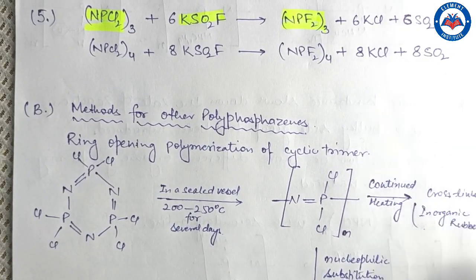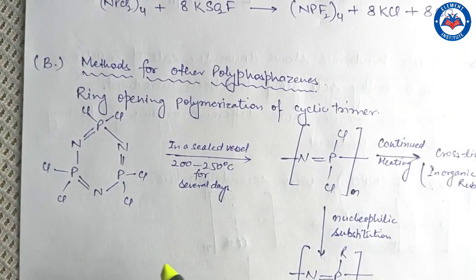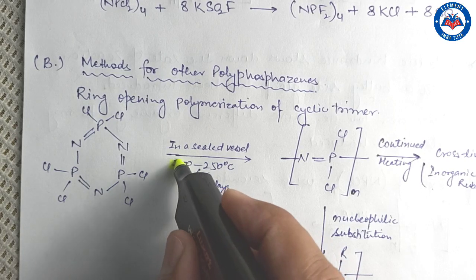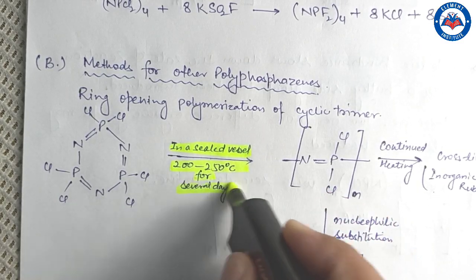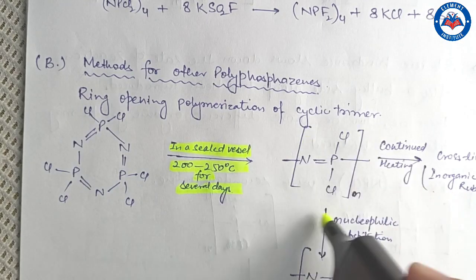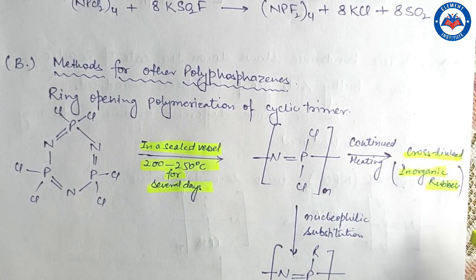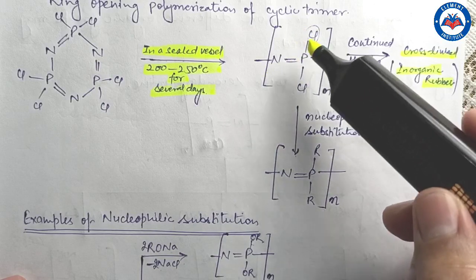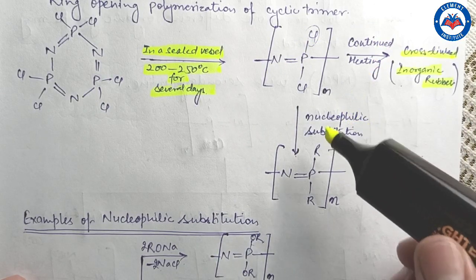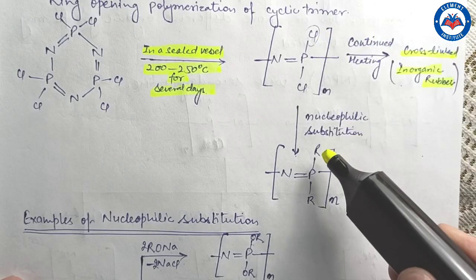Other polyphosphazenes can be obtained from cyclic trimers by ring-opening polymerization. The pure cyclic trimer is heated at around 200 to 250 degrees Celsius in a sealed tube under moisture-free conditions for several days, forming linear chain polymers. Continued heating leads to the formation of a cross-linked inorganic rubber. The resulting polydichlorophosphazene, when dissolved in suitable solvents, can undergo nucleophilic substitution reactions where both halogens are replaced by nucleophiles.